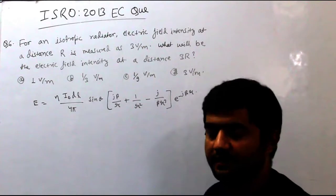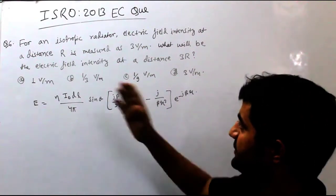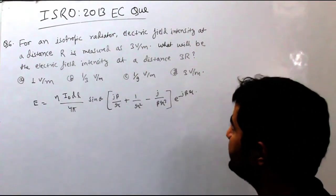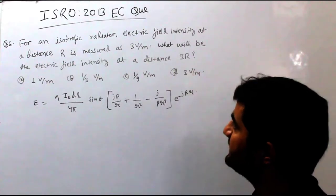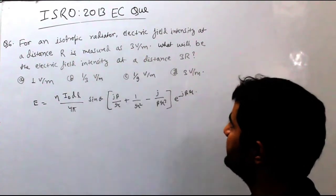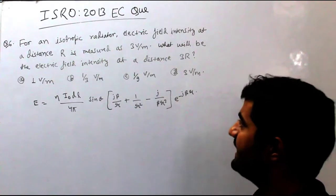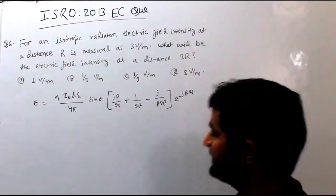So, let's see the next question. Question number 6. For an isotropic radiator, electric field intensity at a distance R is measured as 3V per meter. What will be the electric field intensity at a distance...